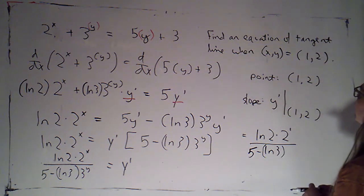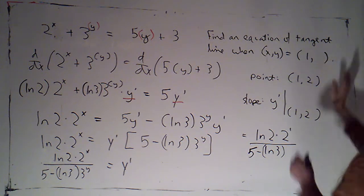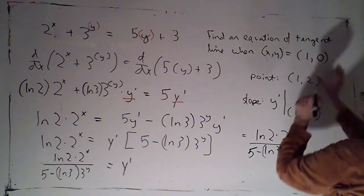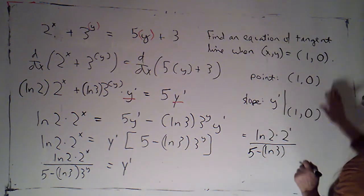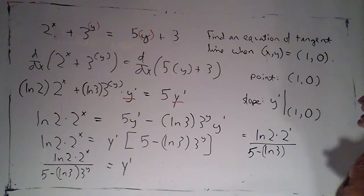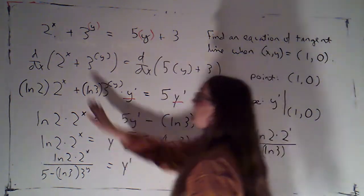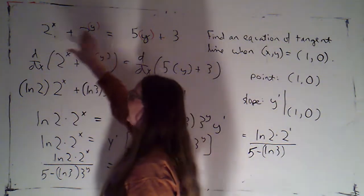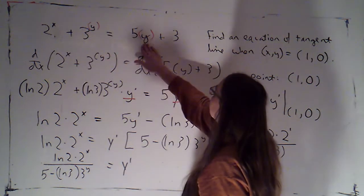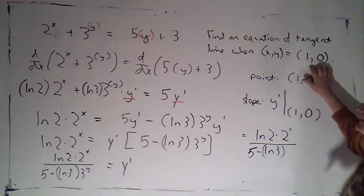Oh, and I'm sorry. I'm realizing I meant this to be 1, 0. I'm going to adjust that. I apologize. Here's what's happening. If I plug in 1 for x and 0 for y, this becomes 2 to the first is 2, 3 to the 0 is 1, 2 plus 1 is 3. 5 times 0 is 0, plus 3 is 3. 1, 0 is on this curve. 1, 2 isn't.